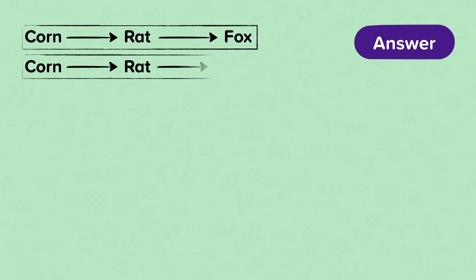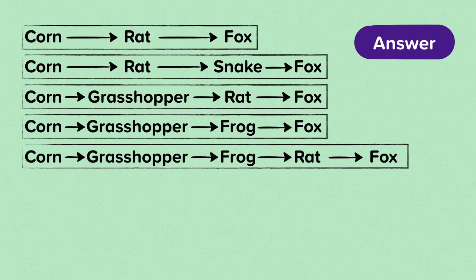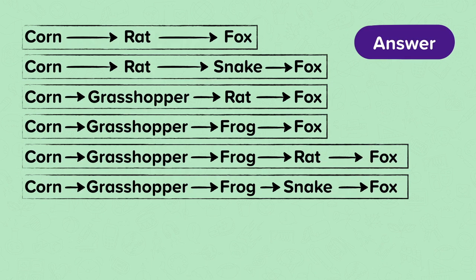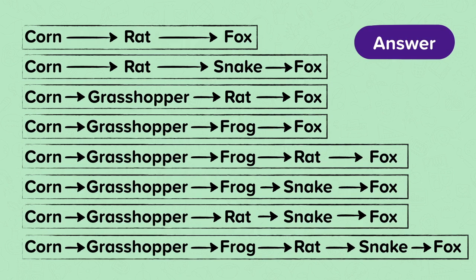The food chains using corn are: corn to rat to fox; corn to rat to snake to fox; corn to grasshopper to rat to fox; corn to grasshopper to frog to fox; corn to grasshopper to frog to rat to fox; corn to grasshopper to frog to snake to fox; corn to grasshopper to rat to snake to fox; and corn to grasshopper to frog to rat to snake to fox.